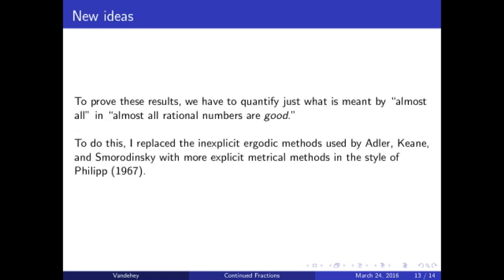Recall that one of the big ideas of Adler, Keane, and Smorodinsky was that almost all rational numbers were good for some appropriate definition of goodness. They did this by relying on ergodic methods that, by their very nature, were inexplicit. To prove these new results, I had to quantify just what was meant by almost all, and to do this I made use of more explicit metrical results, many of which were first proved by Philipp.